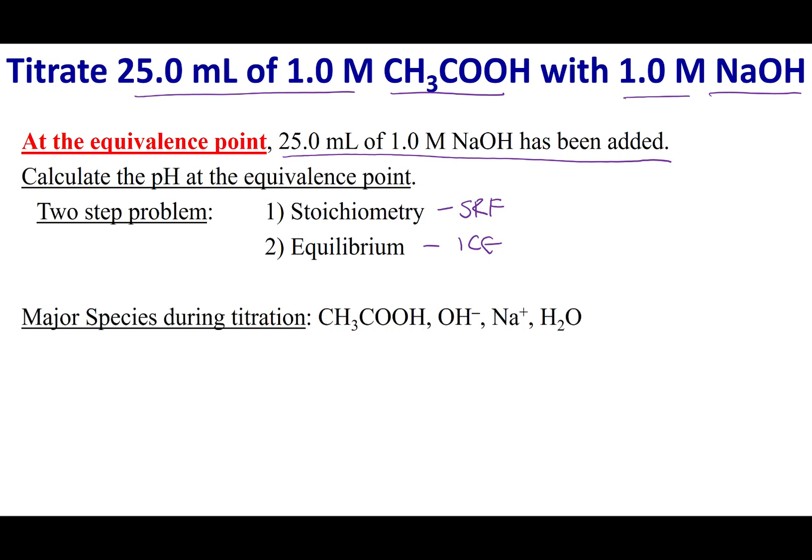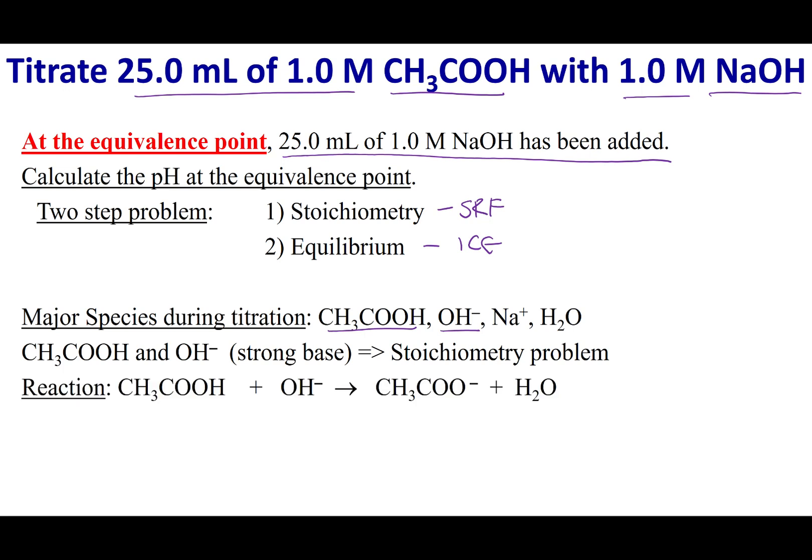I'm going to identify my major species, which means it's acetic acid, OH-, Na+, and H2O. From here, we know our strongest acid is our acetic acid, and OH- is our strongest base. So we know that these two react. They react completely. And so this is why I start out with my stoichiometry problem. I draw the hard arrow for my reaction of my acetic acid reacting with my OH-.